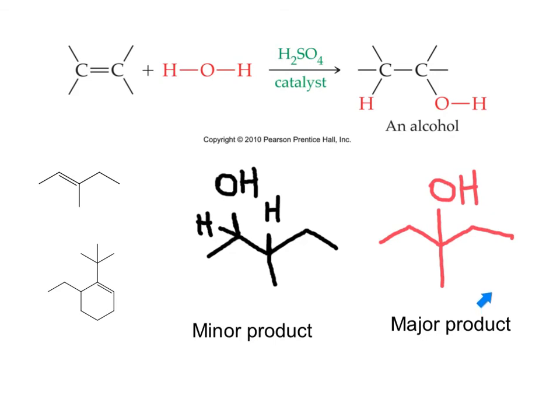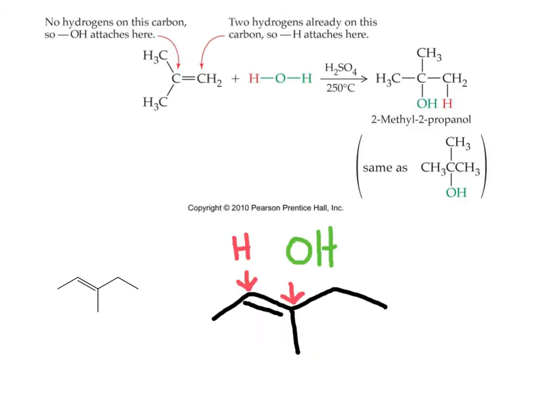The question will ask what is the major product or the minor product of the reaction. The textbook will tell you the experimental percentages, but only knowing what is the major or minor product is expected. In this example, because the intermediate will form a tertiary carbocation, only one product is forming, and that is a tertiary alcohol.